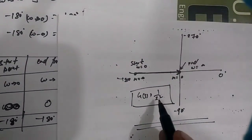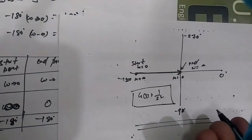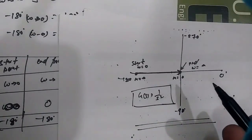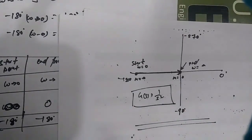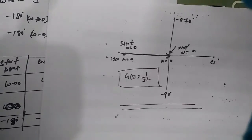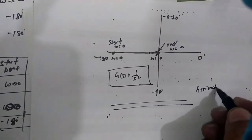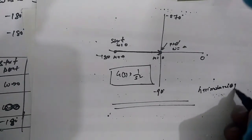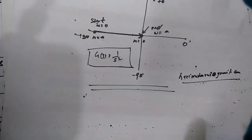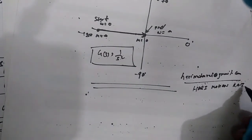This is the polar plot of G(s) = 1/s². It is a straightforward case, and similarly we can draw polar plots for 1/(s+1), 1/(s+2), and other basic transfer functions that do not contain many zeros or poles. Hope you understood this concept. Thanks for watching. For more queries, email me at harimohanraya@gmail.com or subscribe to my YouTube channel.